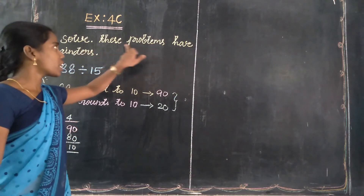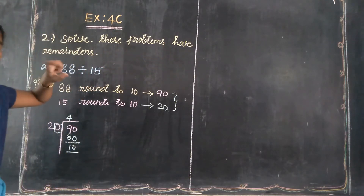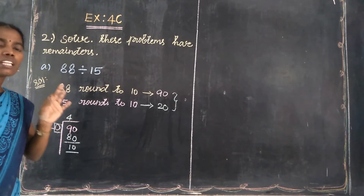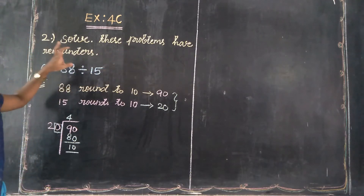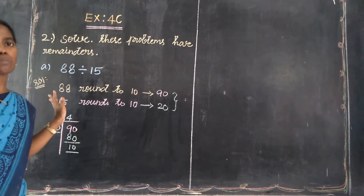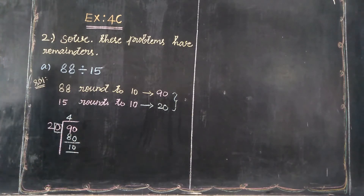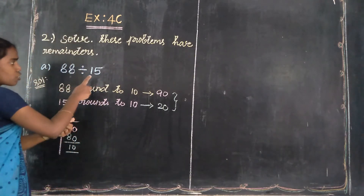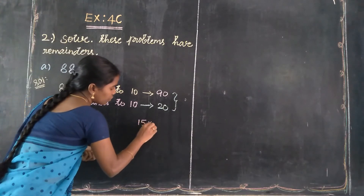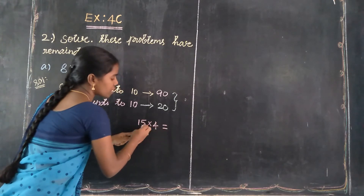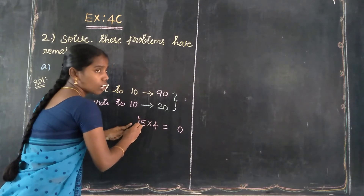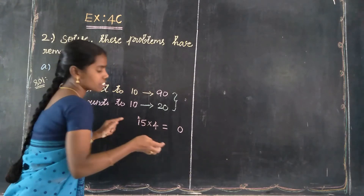Next, consider the 4th term using the original divisor value, which is 15. So 15 into 4: multiply this number. 4 fives are 20, carry 2. 1 fours are 4, plus 2 equals 6. Then the answer is 60.